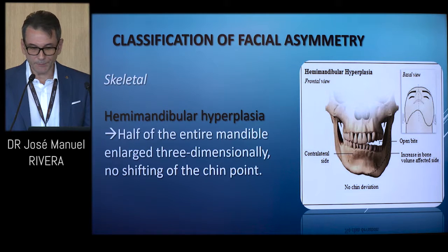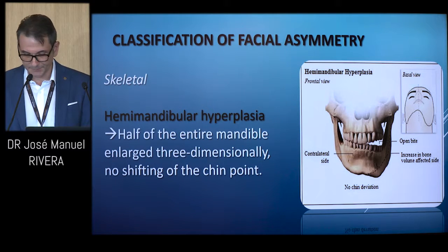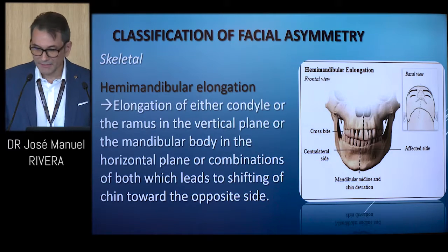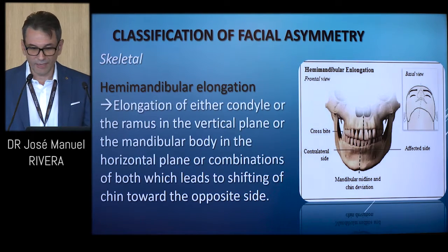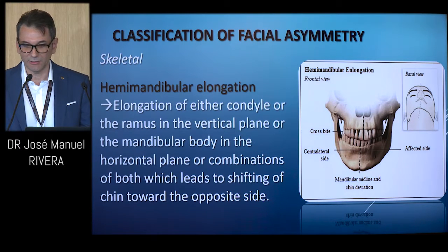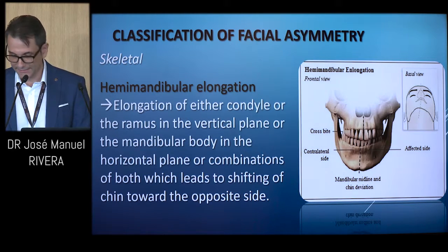With hemimandibular hyperplasia, half of the entire mandible is enlarged three-dimensionally and there is no shifting of the chin point. With hemimandibular elongation, there is elongation of either the condyle or the ramus in the vertical plane, or the mandibular body in the horizontal plane, or combinations of both, which leads to shifting of the chin towards the opposite side.